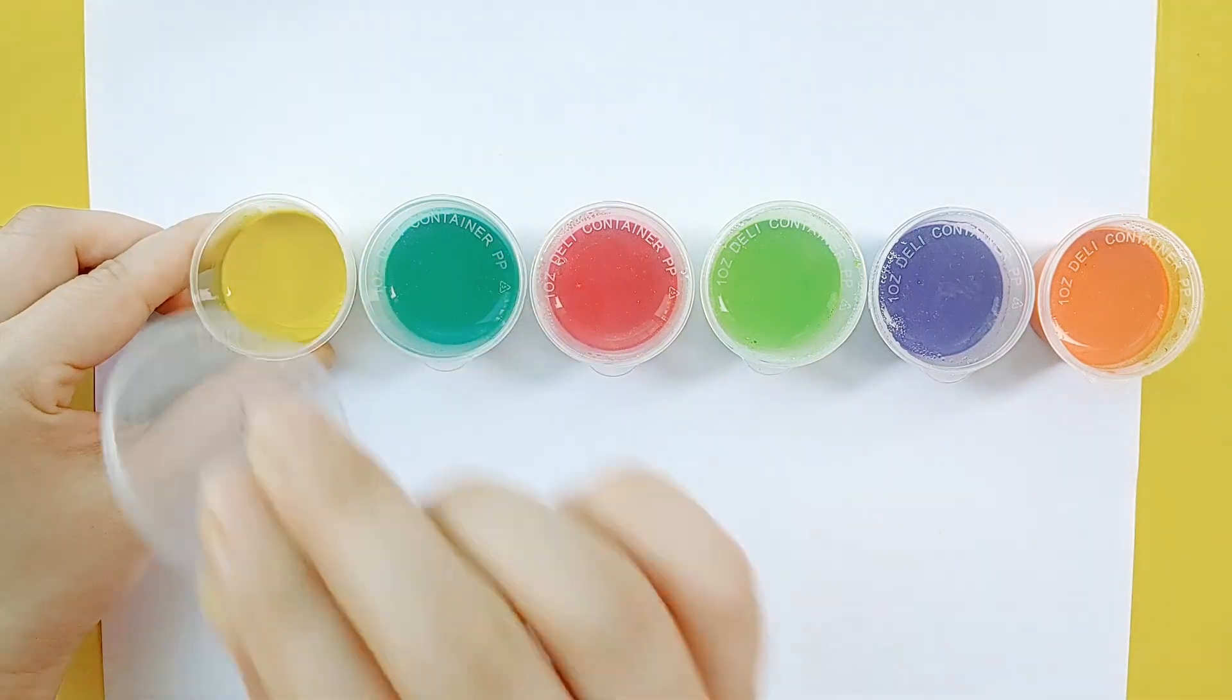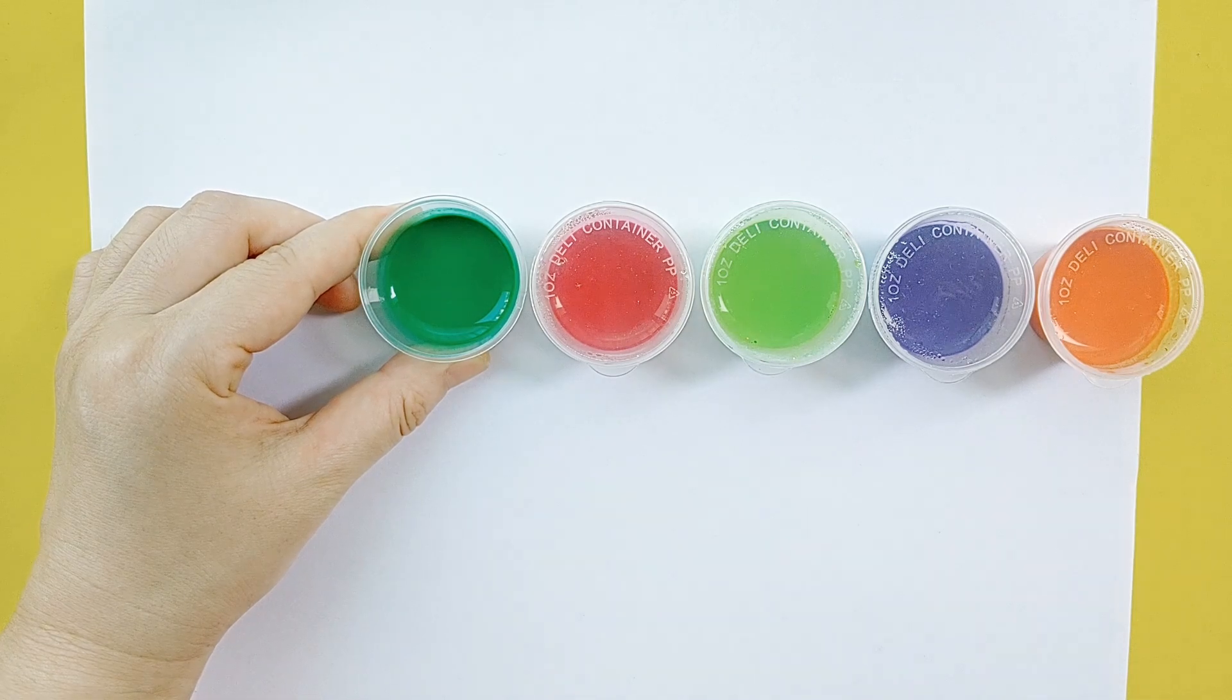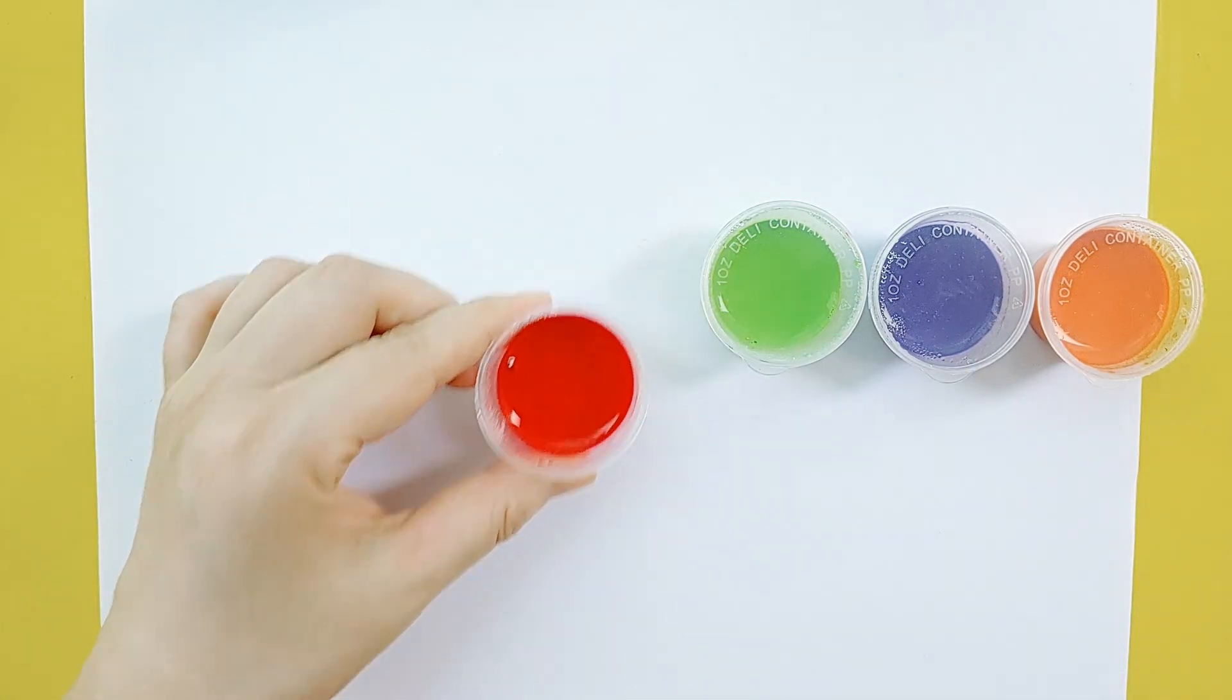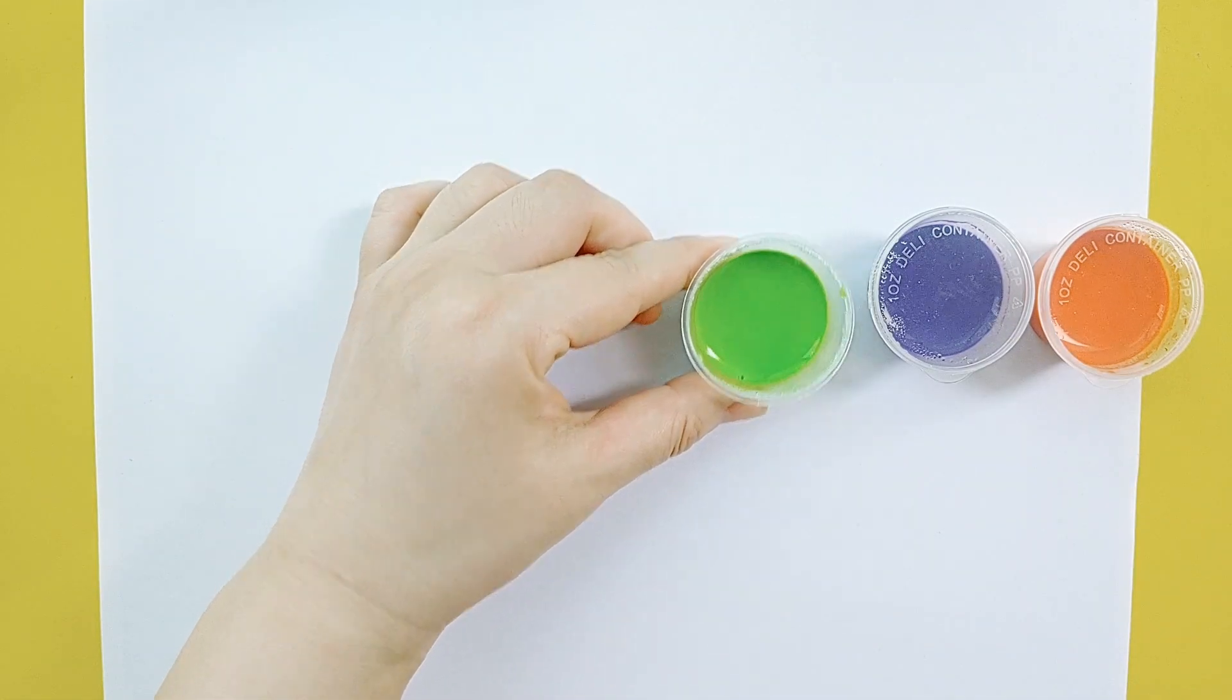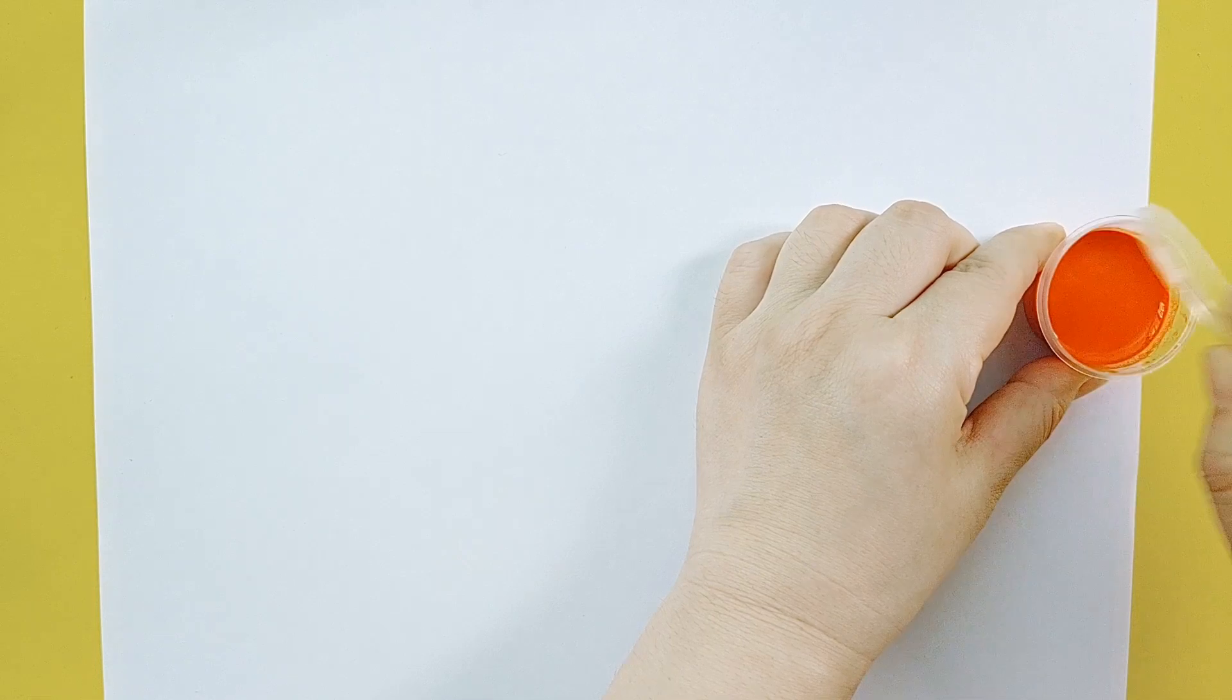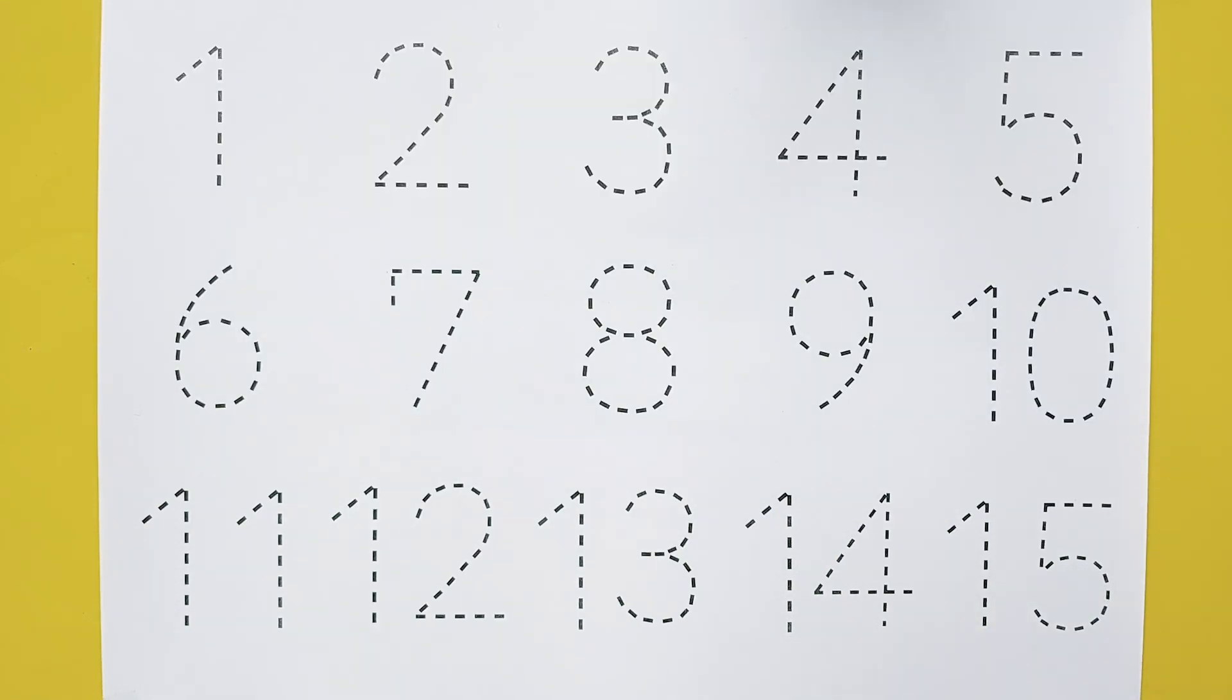One. Yellow color, green color, red color, light green color, purple color. Orange color. Now I know my ABC's, next time won't you sing with me? One.